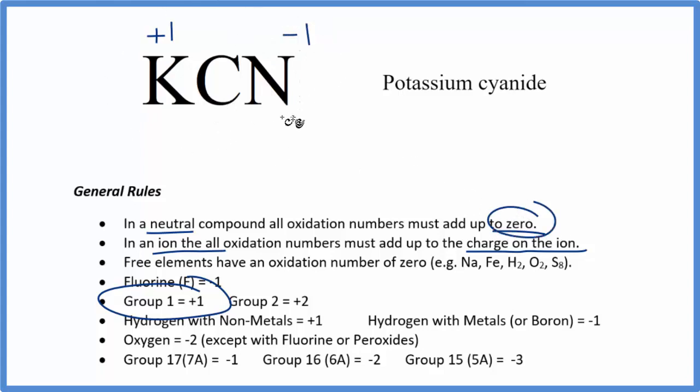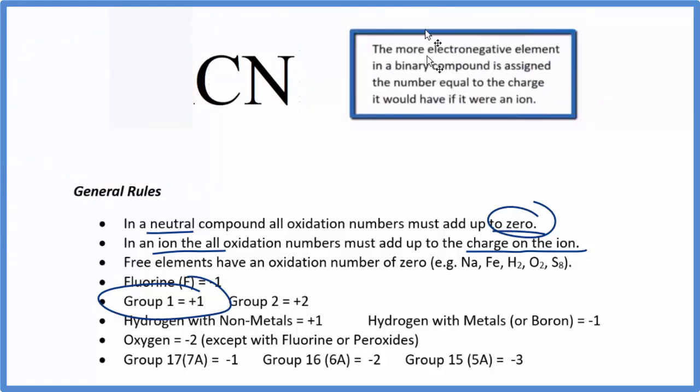If we want to look at just the cyanide ion, it's a little bit more complicated. Let's do that. So we don't see carbon or nitrogen here in our list of rules. This is an exception and they have a very special rule just for this type of situation. The rule says that the more electronegative element in this compound here, that's going to be given the number that's equal to its charge if it were an ion. So nitrogen is more electronegative. And if we look at the charge for nitrogen on the periodic table, that's three minus. So we're going to put this minus three up here for the oxidation number of nitrogen.